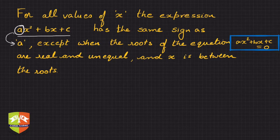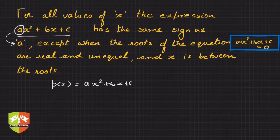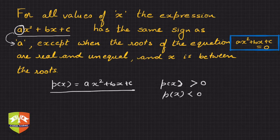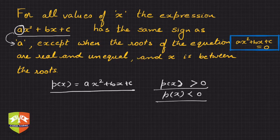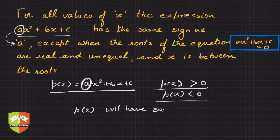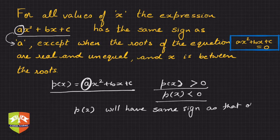Let us understand what we did in the previous session. We talked about p(x) = ax² + bx + c, which is a quadratic polynomial. We are interested in finding the sign of it — whether p(x) will be greater than zero or less than zero. The question is: can we predict this based on only the coefficient of x², that is 'a'? We said that p(x) will have the same sign as 'a'.